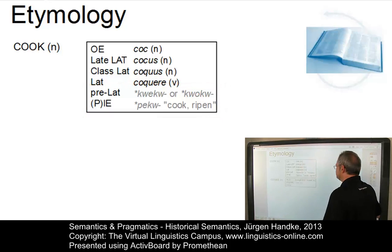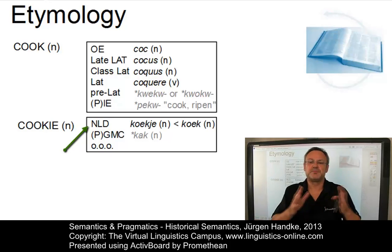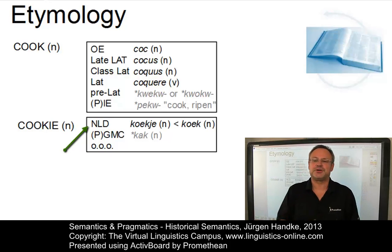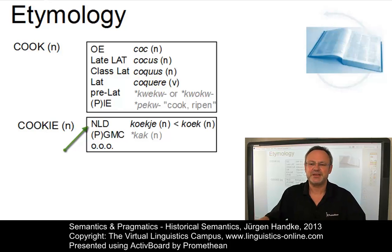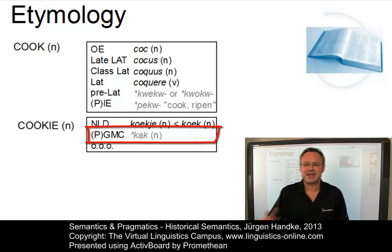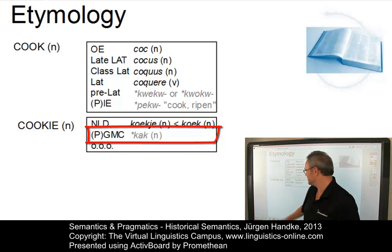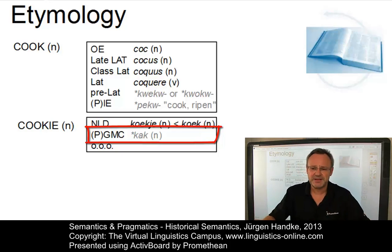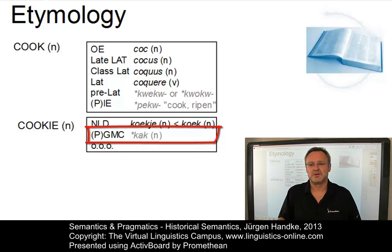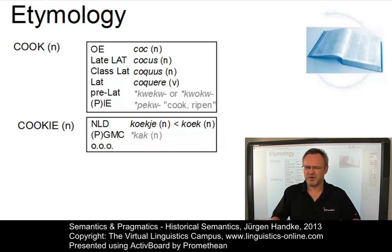Cookie, by contrast, comes from Dutch 'koekje', which means 'small cake', and is the diminutive of 'koek', which means 'cake'. And this can be reconstructed as 'kaak' — another proto-word — in Proto-Germanic, meaning 'round thing'. And some people even say the whole thing is of obscure origin.